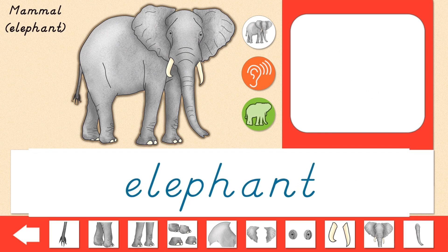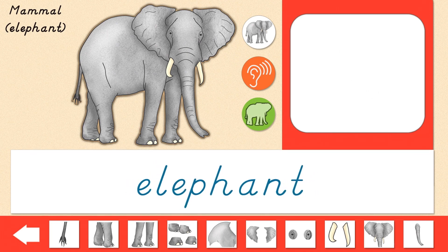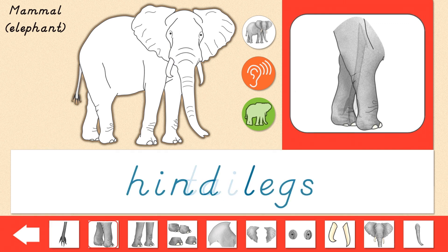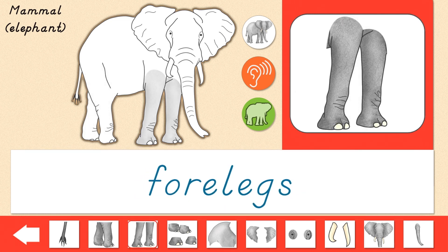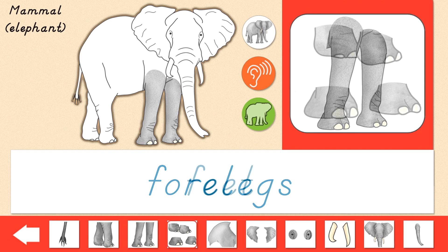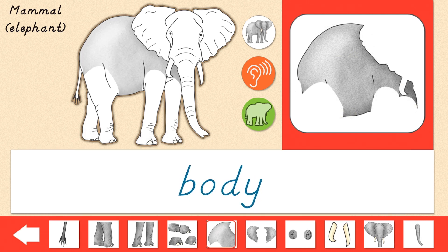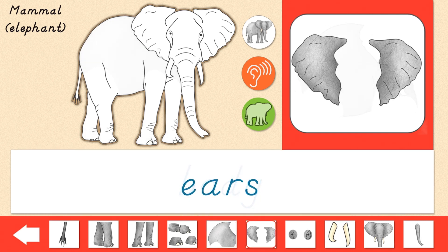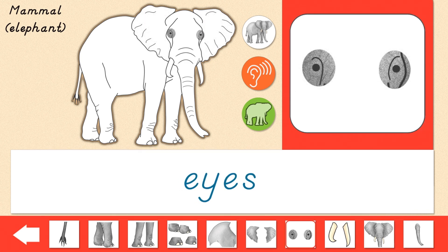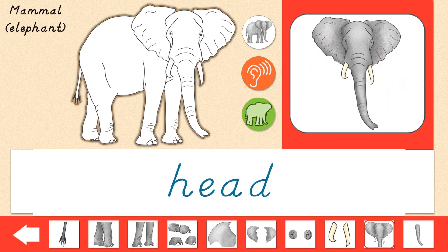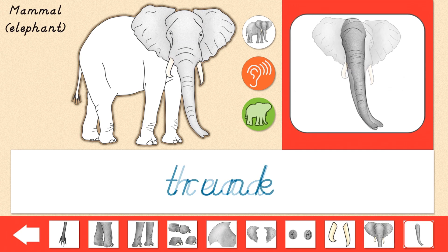Let's learn the parts of an elephant. Tail, hind legs, forelegs, feet, body, ears, eyes. Tusks, head, trunk.